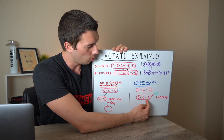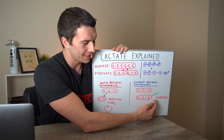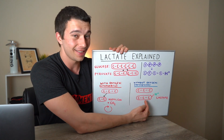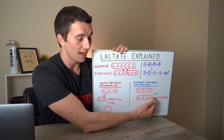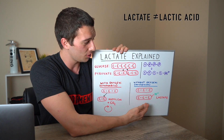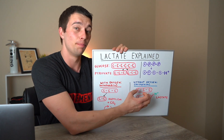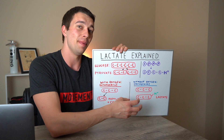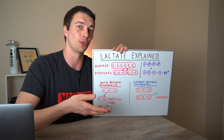You might be thinking: once it has that hydrogen ion, is it lactic acid because it's now acidic? The answer is no. Lactate is actually a base — it's missing a proton and it's accepting a hydrogen ion. So it would actually be incorrect to refer to lactate as lactic acid. Lactate is buffering hydrogen ions out of the bloodstream and making the bloodstream less acidic, bringing the pH back up toward neutral.